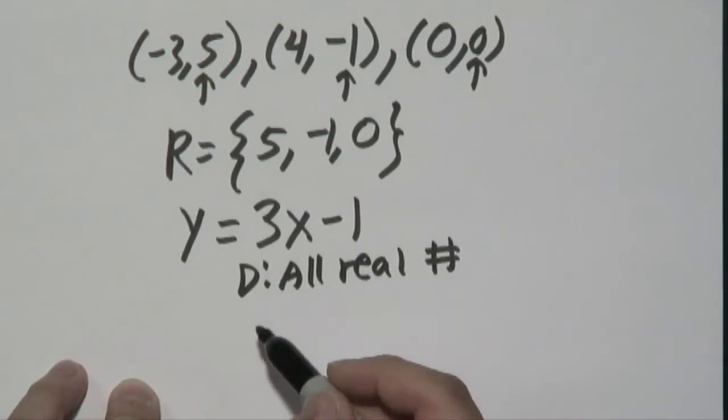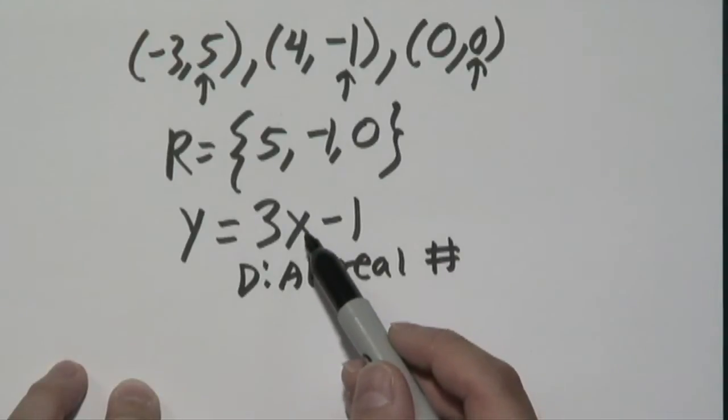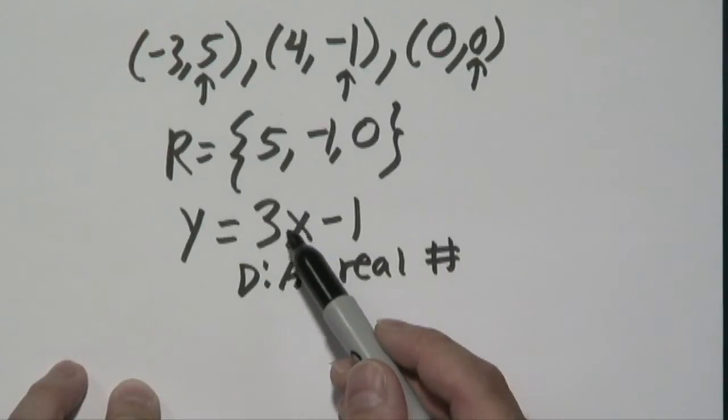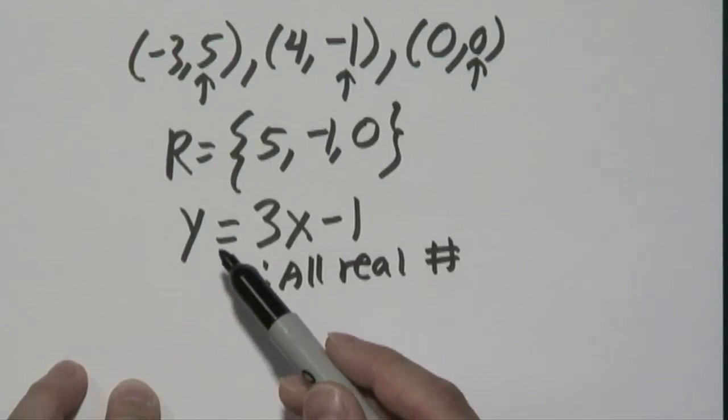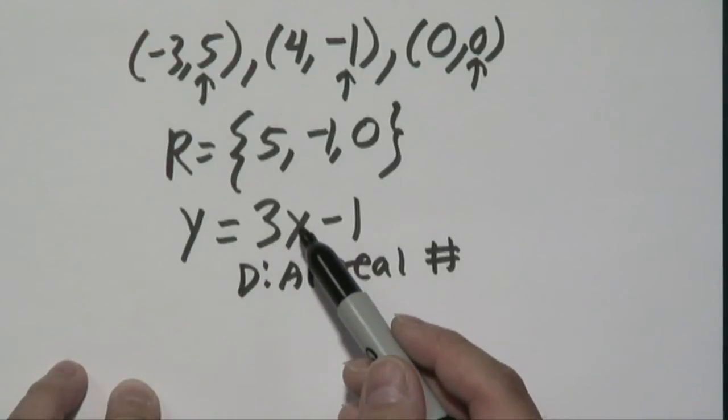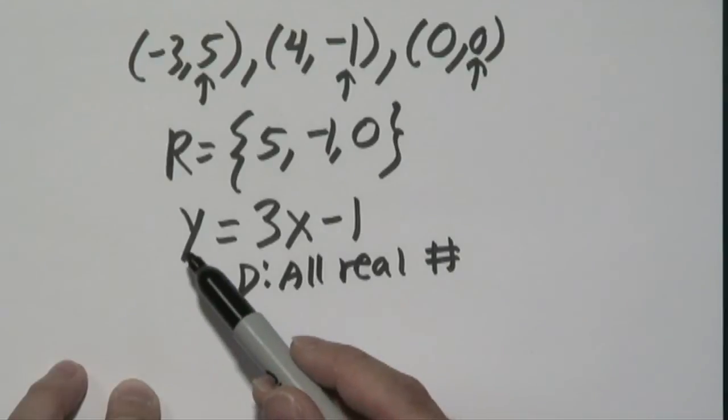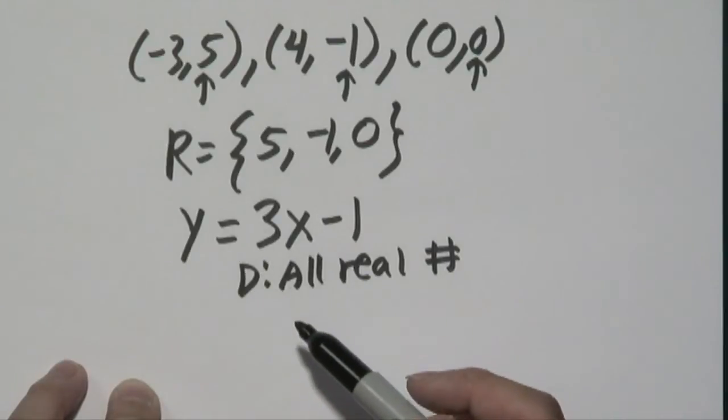But how does that relate to the range? Well, if you plug in, for example, any positive number here, you're going to get a positive number for the y value, which is part of your range. And if you plug in negative values for x, you're going to get a negative value for y.